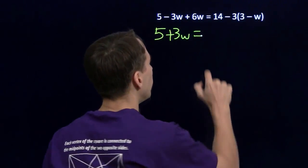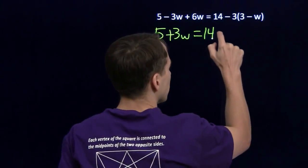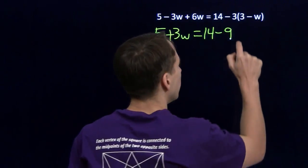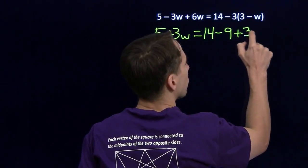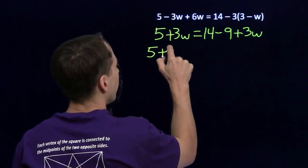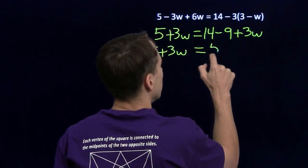Now over here on the right, we'll distribute the 3. Minus 3 times 3, that gives us minus 9. Minus 3 times minus w, that gives us a plus 3w. Left side, we can't simplify that anymore. We have 5 plus 3w. And the right side, 14 minus 9, of course, is 5.